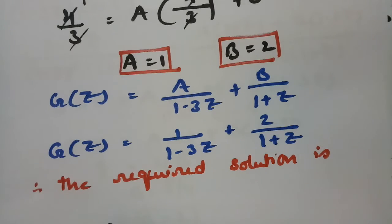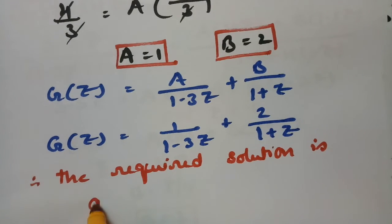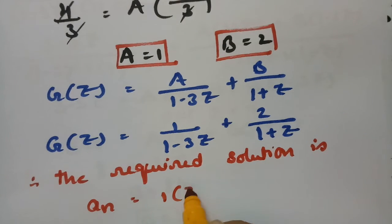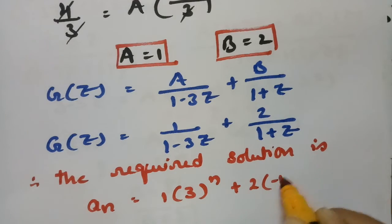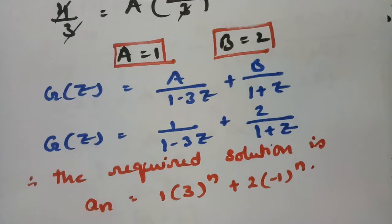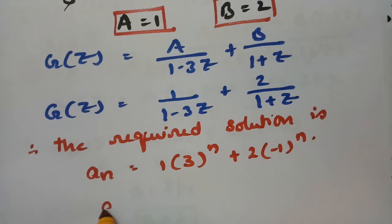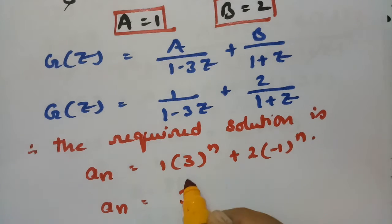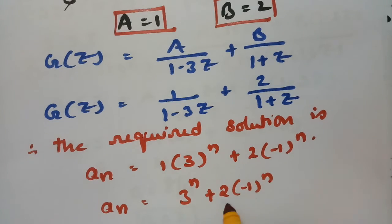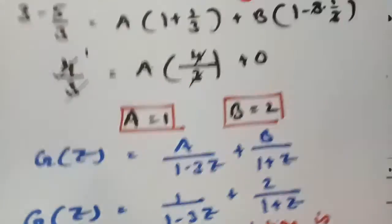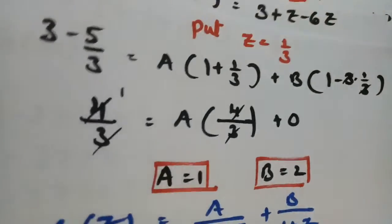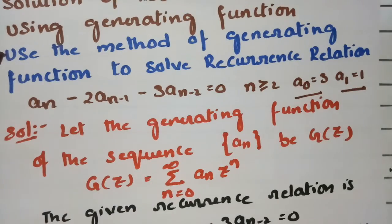Therefore the required solution is: aₙ equals 3ⁿ plus 2 times (minus 1)ⁿ. This is how we solve the recurrence relation using the generating function method.